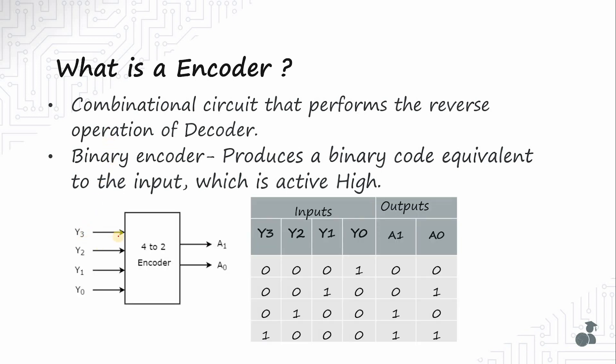Let's take the example of a 4 to 2 encoder that has 4 input lines y3 to y0 and 2 output lines a1 and a0. Based on which of the inputs is high, it encodes to a particular code at the output. So if input line y0 is high then the output is 00. If y1 is high output is 01. If y2 is high output is 10. If y3 is high output is 11.